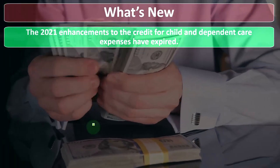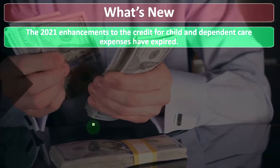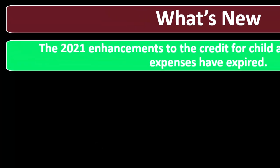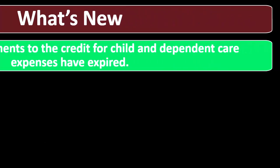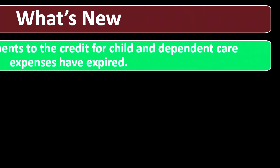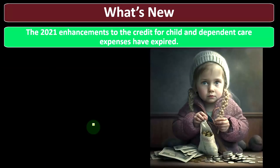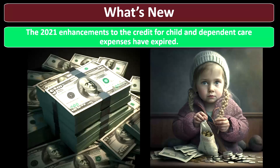So what's new? The 2021 enhancements to the credit for child and dependent care expenses have expired. This is a common theme — when the COVID situation happened, a lot of the response was through the tax code: stimulus payments and inflated credits, including the child tax credit and this child and dependent care expenses credit.